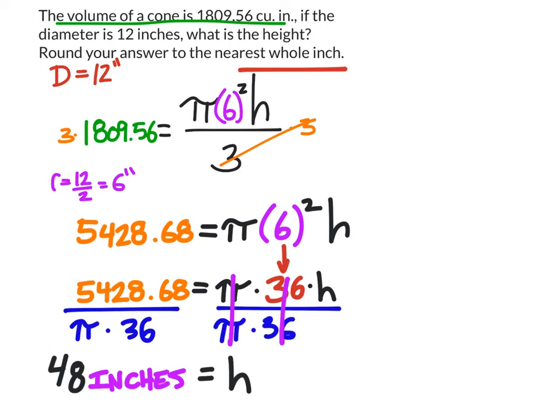I put that in my calculator. It gave me 1,809.557368. That .557 rounds to .56. Since we rounded the 48, we'd have to do some rounding when checking our work. That worked out well. Our answer is 48 inches for the height.